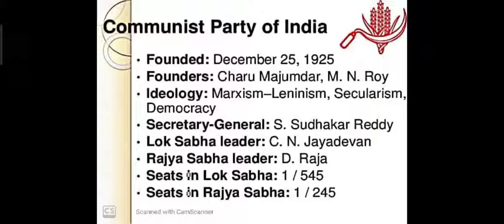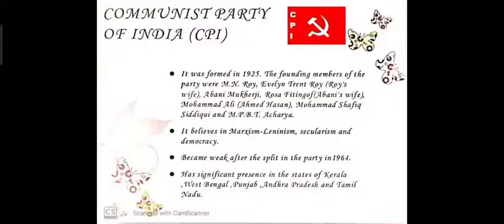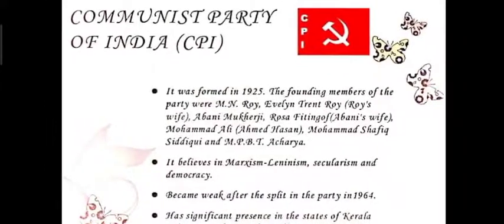The Rajya Sabha leader is D. Raja. In the Lok Sabha election they got 1 seat out of 545, and in the Rajya Sabha 1 out of 245. You can see 'CPI' written on the symbol as well.